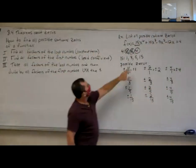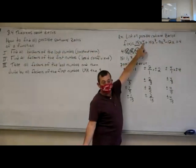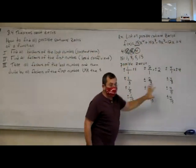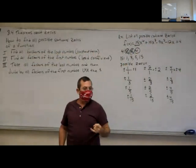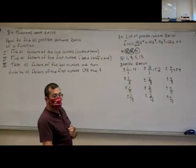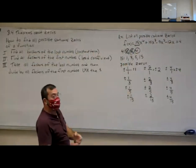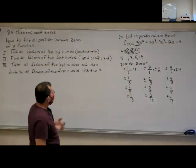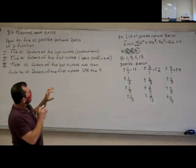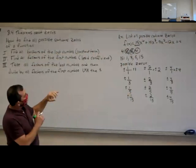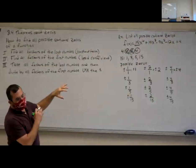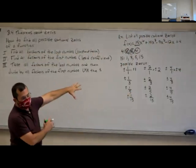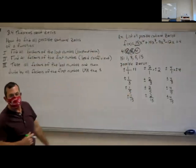Now this thing would technically have 6 zeros. All 6 of them could be rational. I could end up with, say, 4 of them rational and the last two could be imaginary. But every problem is going to have at least one or two of these rational zeros.